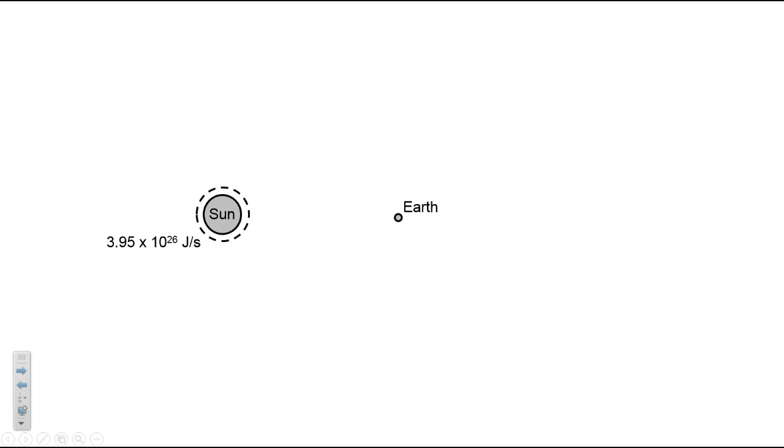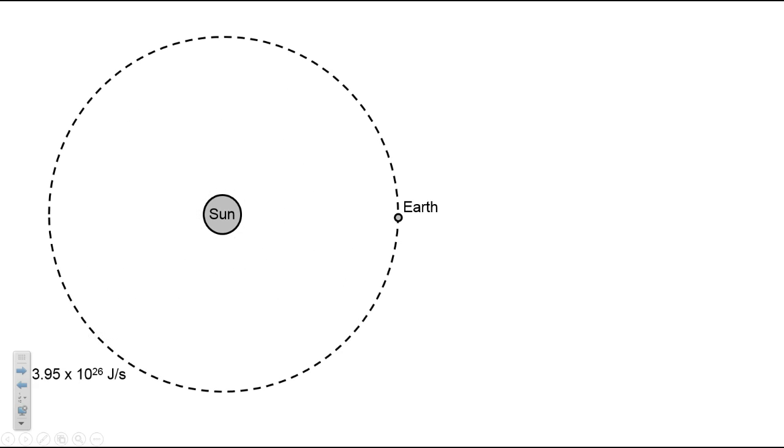This energy takes the form of electromagnetic radiation, specifically, it's mostly visible light. The energy spreads out in all directions like a sphere, and by the time it reaches the Earth, it has been spread over a giant area.